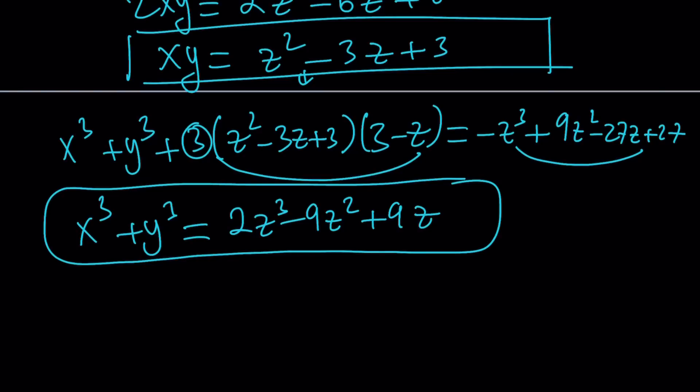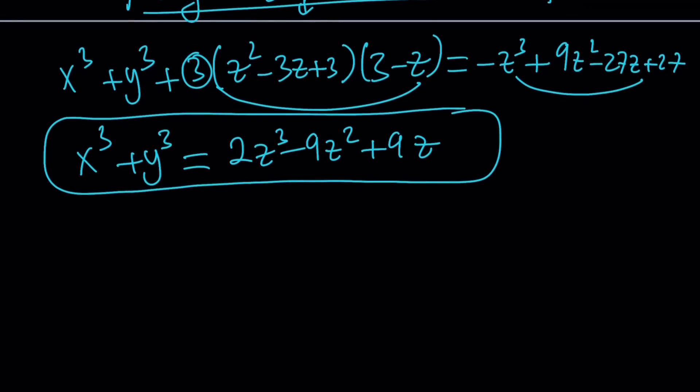Here is the very critical part. We are trying to find x to the 7th plus y to the 7th plus z to the 7th. But let's find the sum of cubes first. Remember, we had three variables but treated them as a two-variable system. Now we're going to add z cubed to both sides. That's going to give you the sum of the cubes. Add z cubed: 3z cubed minus 9z squared plus 9z.